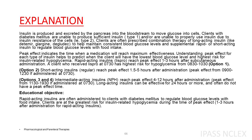Option 2. Short-acting insulins, regular, reach peak effect 1.5 to 5 hours after administration, peak effect from 0900 to 1230 if administered at 0730. Options 3 and 4. Intermediate-acting insulins, NPH, reach peak effect 4 to 12 hours after administration, peak effect from 1130 to 1930 if administered at 0730. Long-acting insulins can be effective for 24 hours or more, and often do not have a peak effect time. Educational objective: clients are at greatest risk for insulin-related hypoglycemia during peak effect, 1 to 3 hours after administration for rapid-acting insulins.